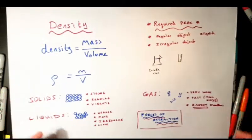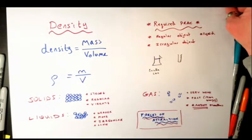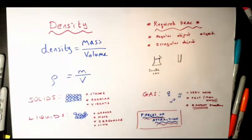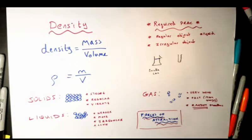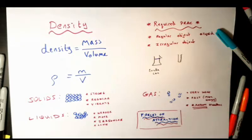First we're going to look at density. You need to know this is part of your GCSE maths as well, so maybe a little bit familiar to you. Density refers to how closely packed together a substance is — how closely packed the particles are to each other. A denser object means the particles are packed very closely to each other.